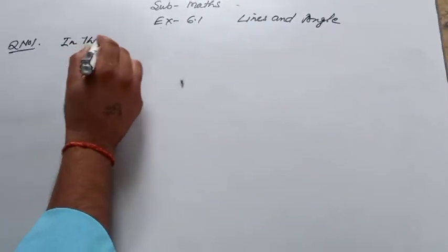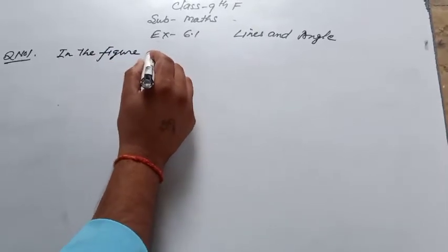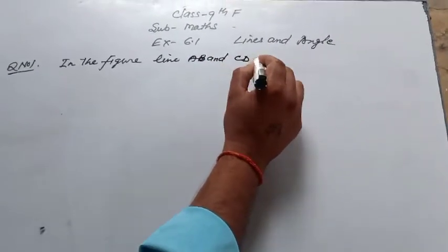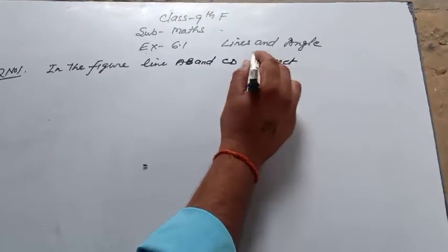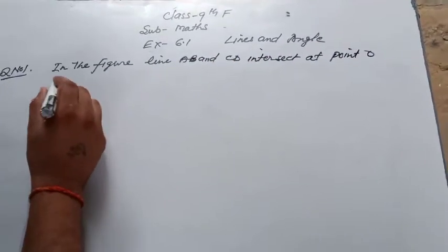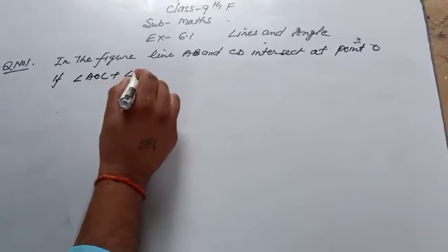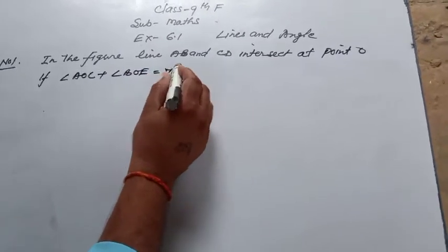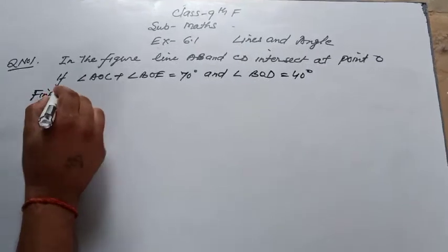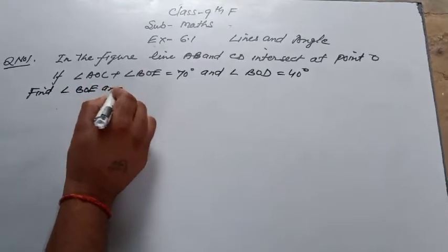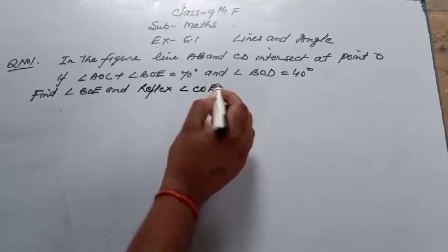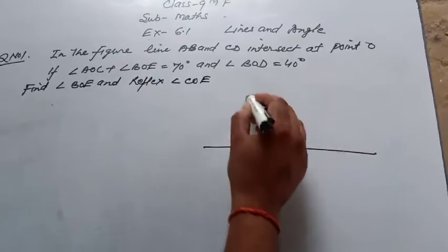In the figure, line AB and CD intersect at point O. If angle AOC plus angle BOE is equal to 70 degrees and angle BOD is equal to 40 degrees, find angle BOE and reflex angle COE.